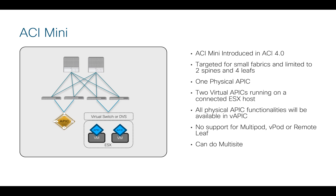All of the same functionalities of the physical APIC will be available in VAPIC, but when we start to look at more sophisticated multi-location type designs like multipod, vpod, and remote leaf, those are not supported with the VAPIC — obviously because we're limiting this to two spines and four leaves. But you can in fact do multi-site, so this ACI Mini instance can be a site in a larger multi-site environment that has larger fabrics doing other things for you.